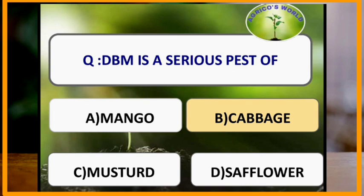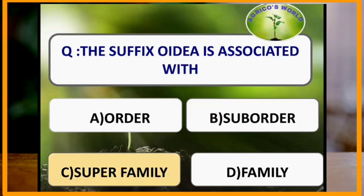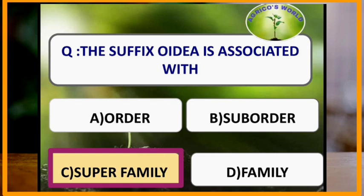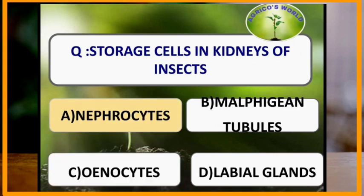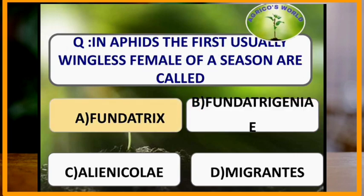Diamond back moth is the serious pest of cabbage. The suffix '-oidea' is associated with superfamily. Storage cells in the kidneys of insects are nephrocytes. Insects that do not possess antennae are Protura. In aphids, the first usually wingless female of a season is called a fundatrix.